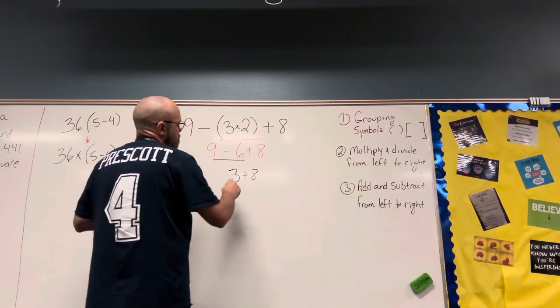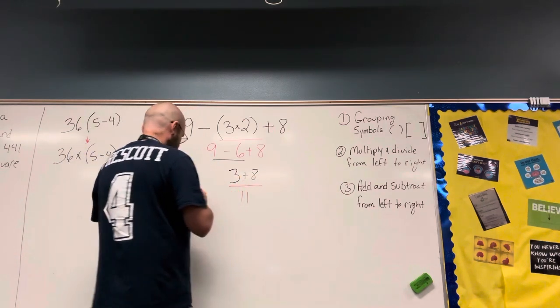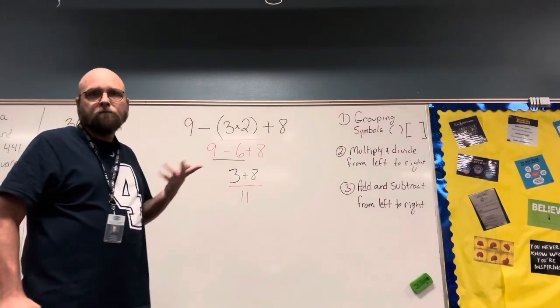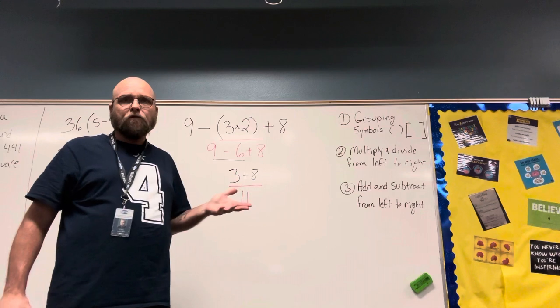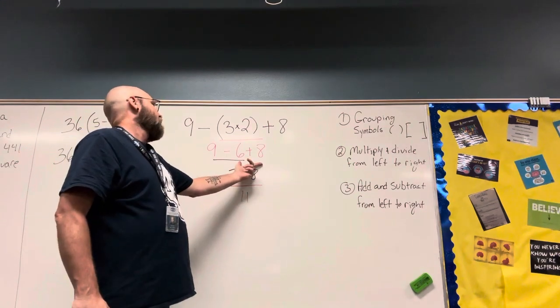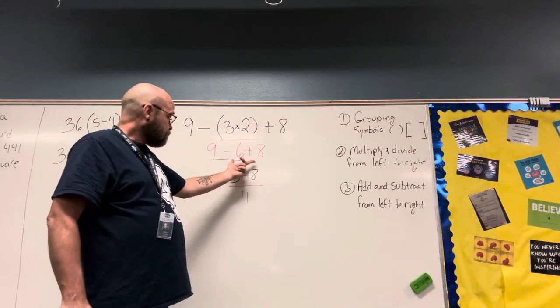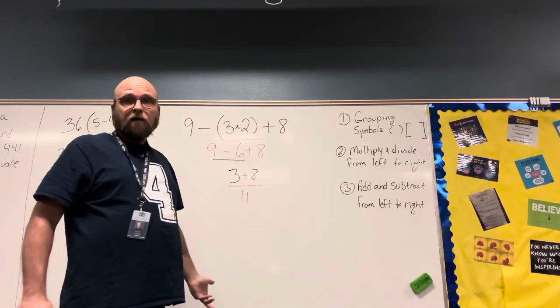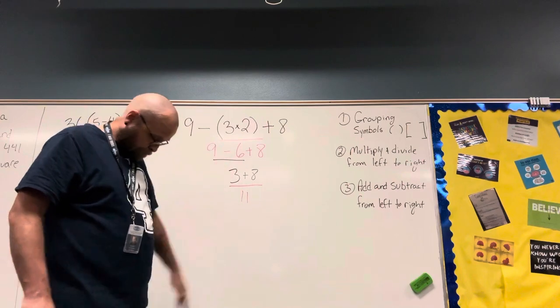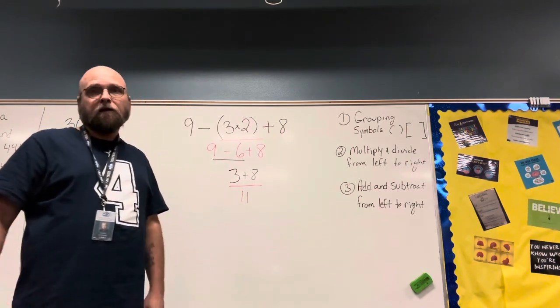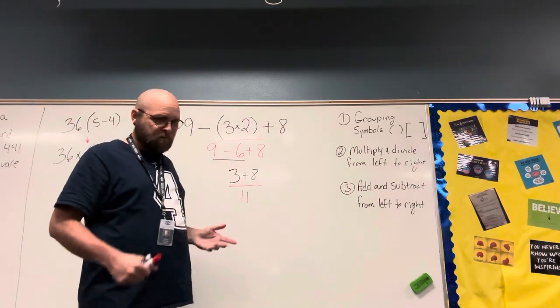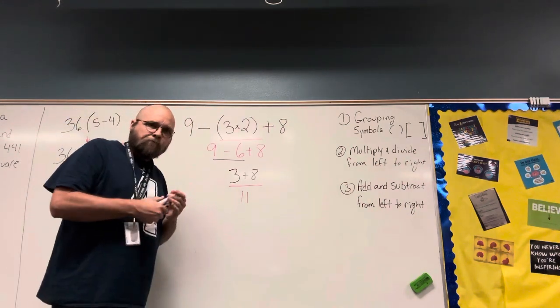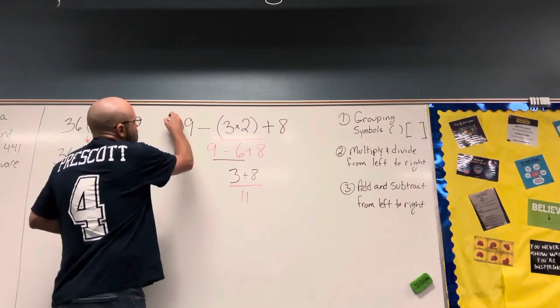And we should get 11. Now, in fifth grade you're going to know a lot of times if you didn't do it in the right order. Because if I would have added these before I subtracted, then I would get 9 minus 14, which would give me negative 5. And so it will be obvious because you're not going to have, like with these kinds of problems, you probably won't have remainders, and you definitely shouldn't have negative numbers.